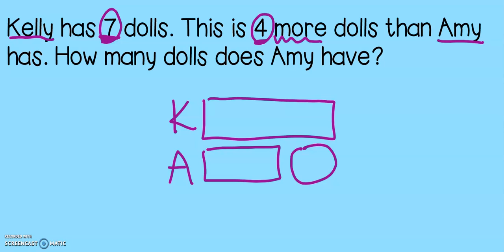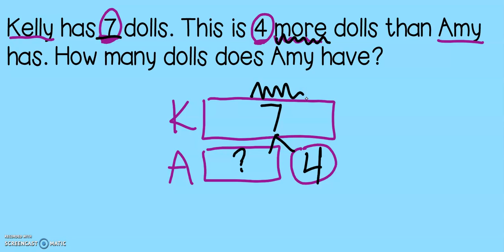Now we can plug in our numbers. Kelly has seven dolls — find the K for Kelly and give her seven. This is four more than Amy, and since it has the word more hooked onto it, I know it goes in that special circle. Then I can put my missing question mark over here. If seven is our king, I know I can't have a number bigger than seven.